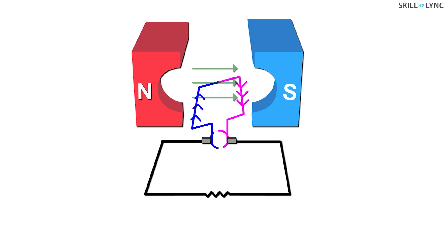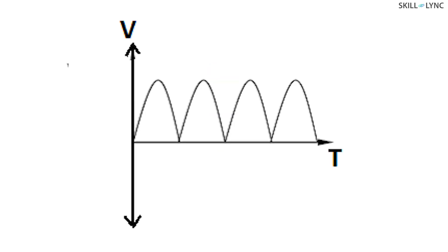With the current reversing its direction in the armature, the direction of current across the load does not change. Hence, we get our DC generator with output only in one direction.